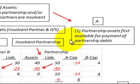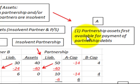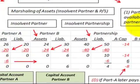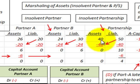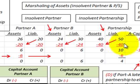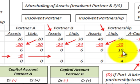Using the marshalling of assets concept, we first look at the partnership's assets — they're first available for the payment of the partnership debts. The partnership has $40,000 worth of assets subtracted from $50,000 worth of liabilities, leaving a net amount of $10,000 in liabilities still remaining.